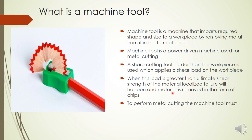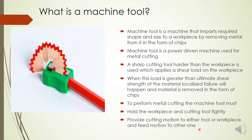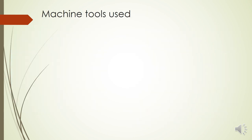To perform metal cutting, a machine tool must satisfy two conditions. First, it must hold the workpiece and cutting tool tightly — just as you hold both the pencil and sharpener firmly. Second, it must provide a cutting motion to either the tool or the workpiece, and feed that motion to the other, creating the necessary relative motion between the two.